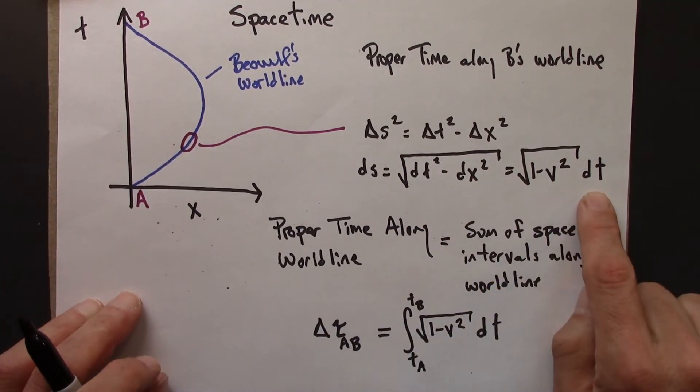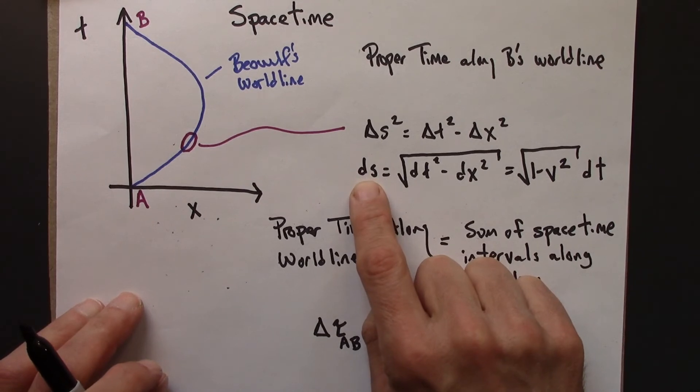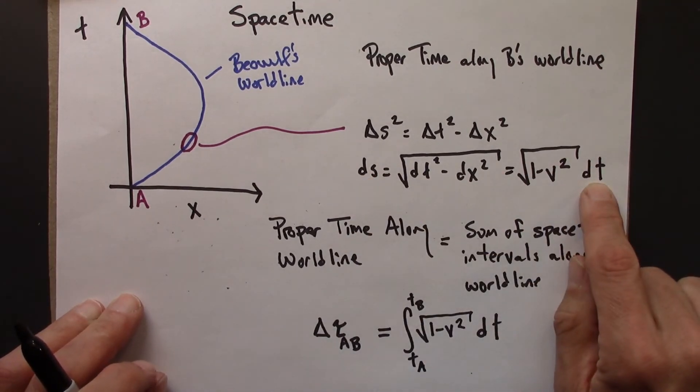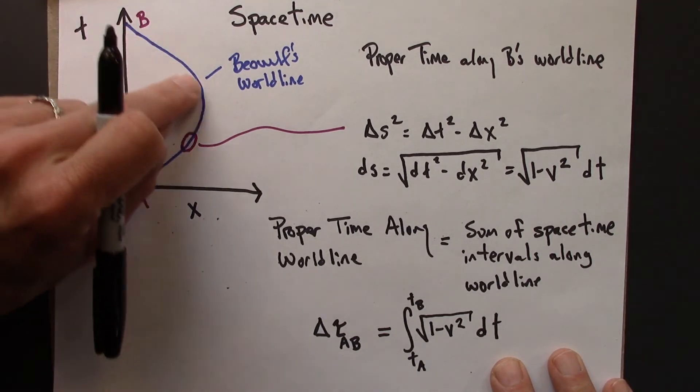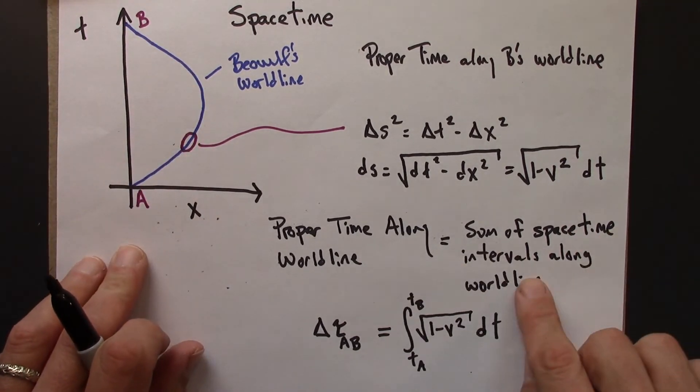I do that, and do a little bit of algebra, and I get this. This is the amount that has elapsed on Beowulf's watch in this time interval delta t. To get the total time that elapses on his watch, we need to add up all the times, all these little spacetime intervals, along this world line.